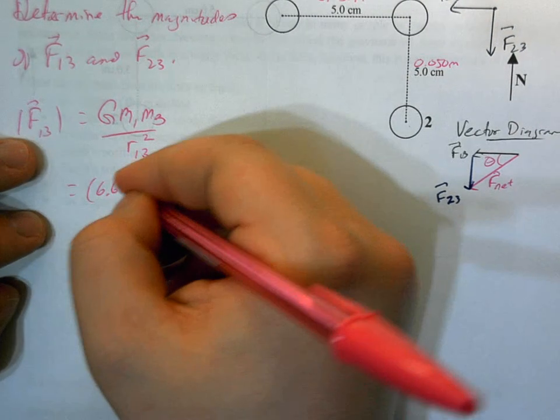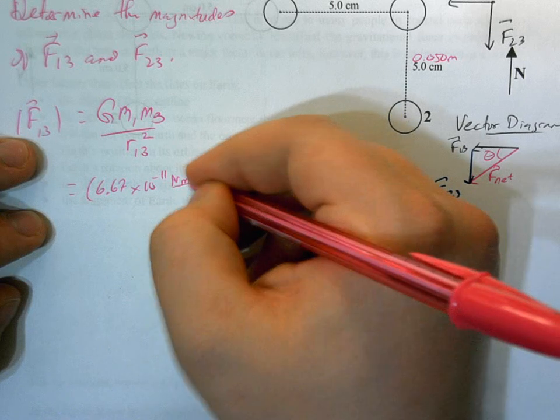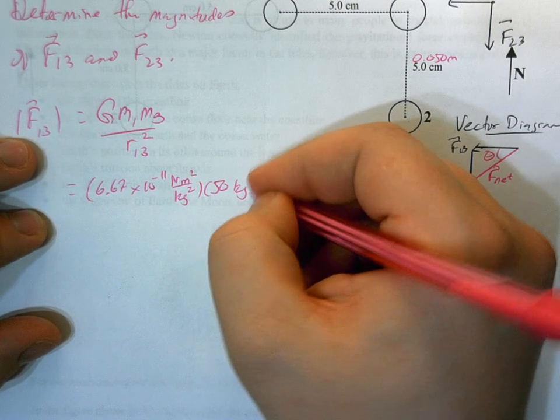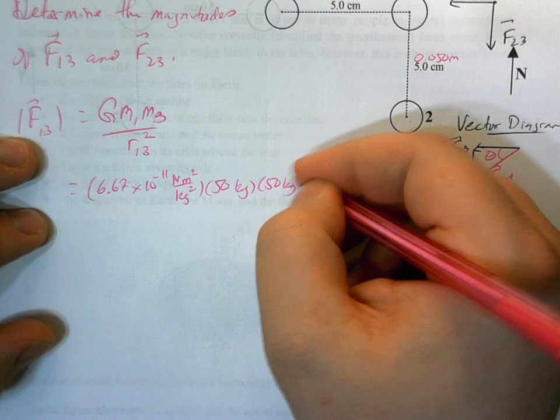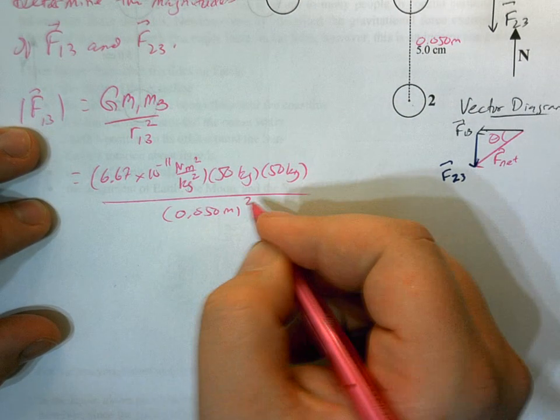So we know that we have 6.67 times 10 to the minus 11 newton meters squared per kilogram squared. Our two masses are both 50 kilos, 50 kilos, and then we're going to divide this by 0.050 meters squared.